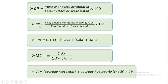The second one is germination energy. This is equal to the number of seeds germinated at day 4, 7, or 14 — depending on your protocol — divided by the total number of seeds tested, multiplied by 100. This will give you the value of germination energy.